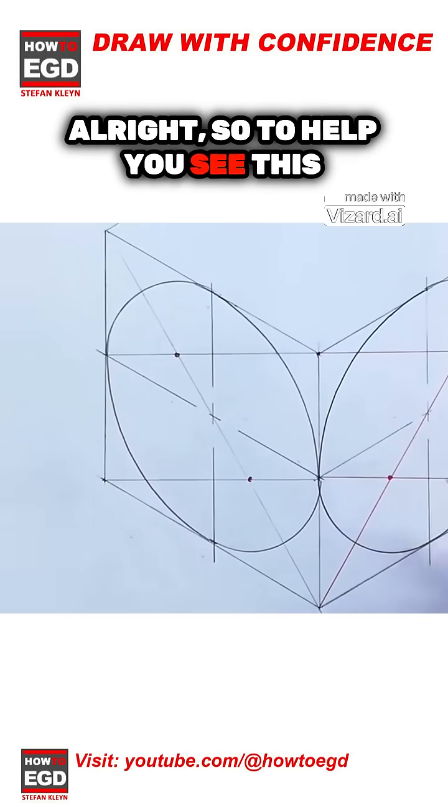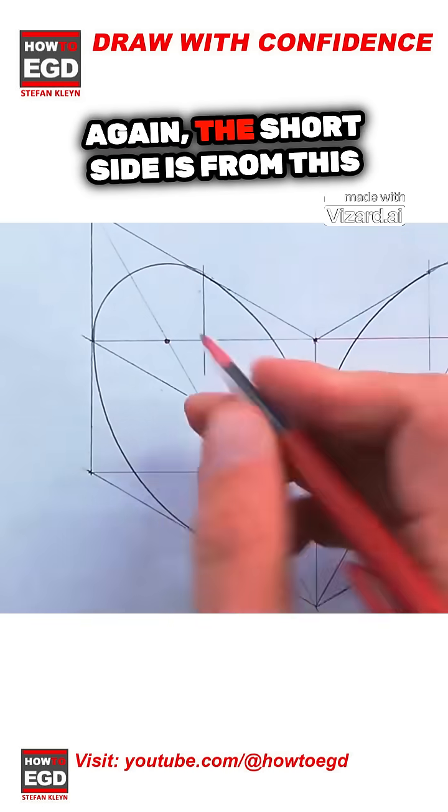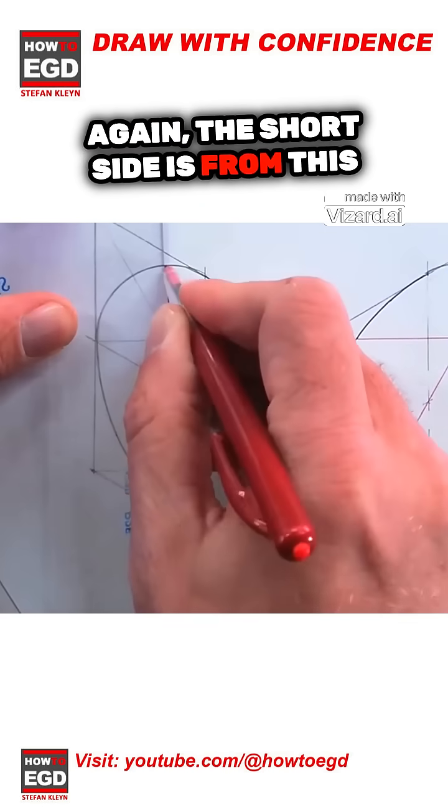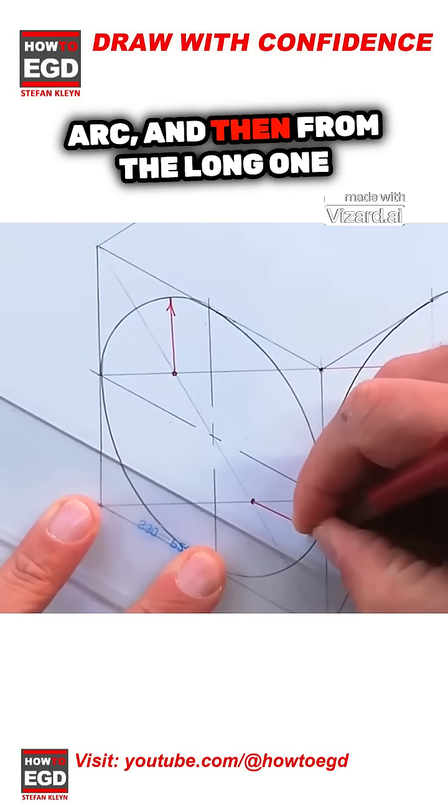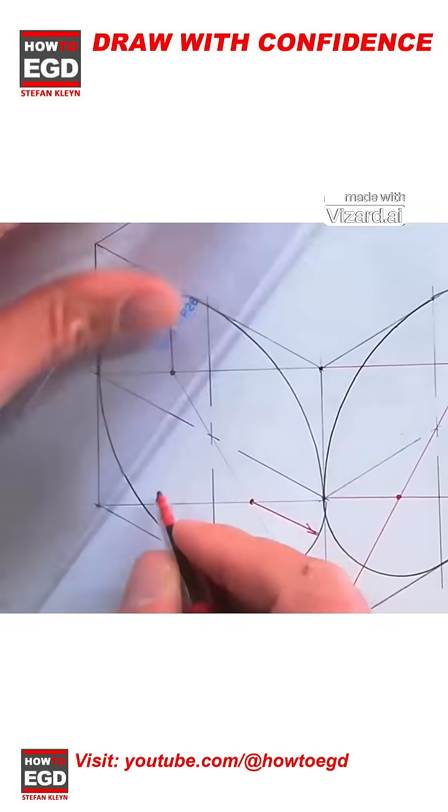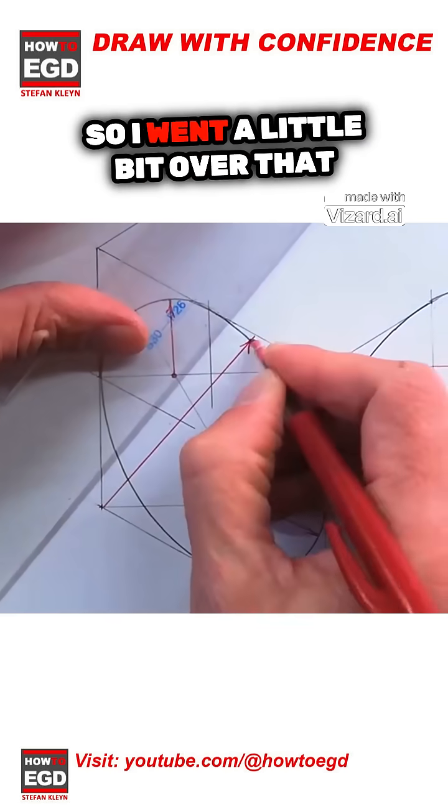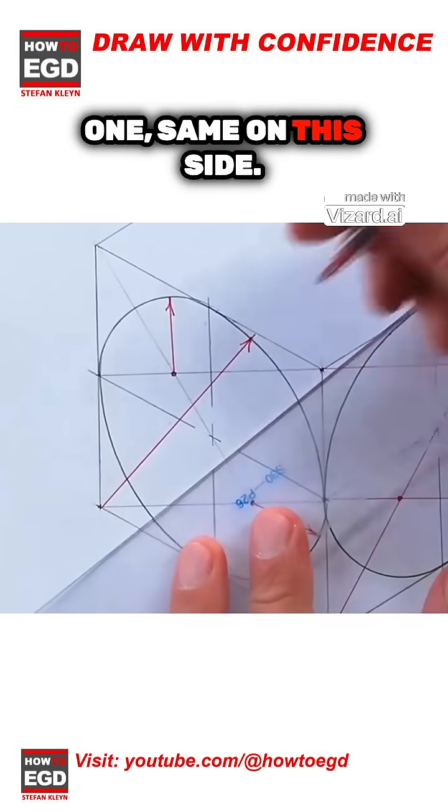So to help you see this again, the short side is from this corner, just that radius of that arc. And then from the long one across here. So I went a little bit over that one, same on this side.